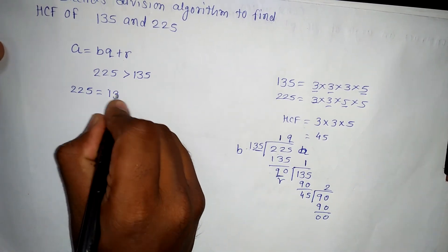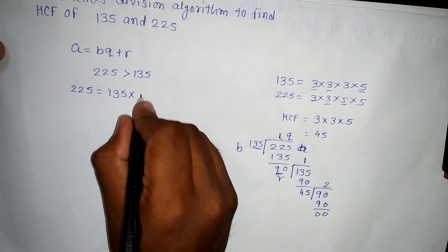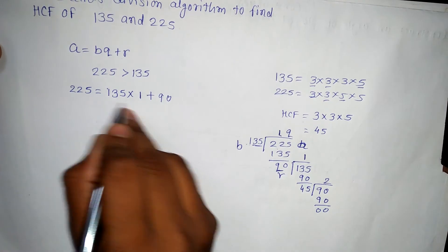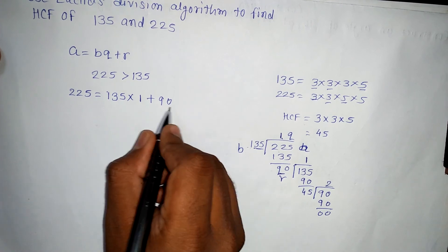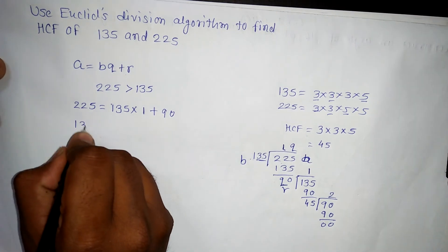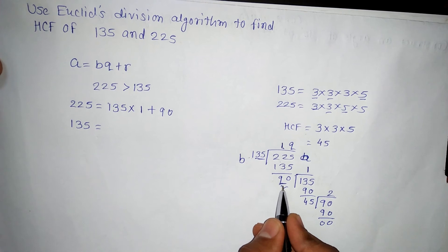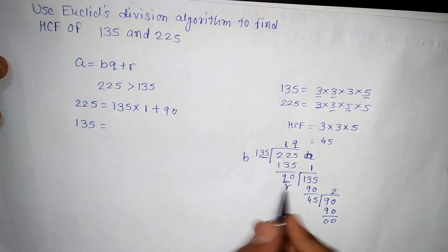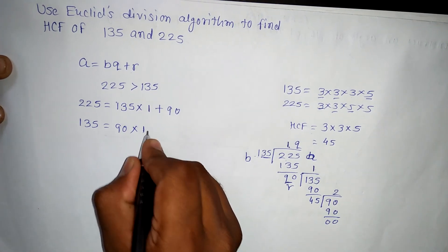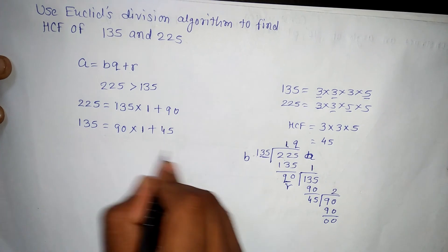So this is what, 225 is equal to B. B means 135 into this one, that is quotient 1, plus remainder. What is remainder? 90. 135 into 1, 135 plus 90 is equal to 225. Second step, as it is 135, that is dividend has to divide by 90. So this time 90 will be divisor. So 90 into what is quotient? That is 1 plus, in this case, what is remainder? 45.